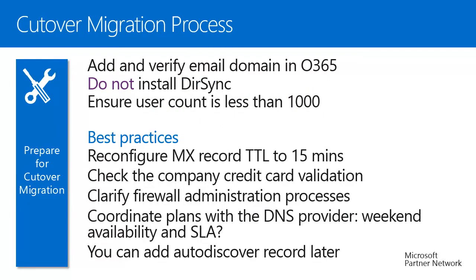You will start the migration with the preparation phase, step number one. In Office 365, you must add and verify your email domain, for example contoso.com. Also, there is a requirement for cutover migration: you should not install the directory synchronization tool. The cutover process is only for customers with fewer than 1,000 users. An important practice from the field: right before the migration, you need to reconfigure the TTL value for your MX record. We have seen TTLs up to one week, which will surely delay migration. Please reconfigure this value to 15 minutes or half an hour.